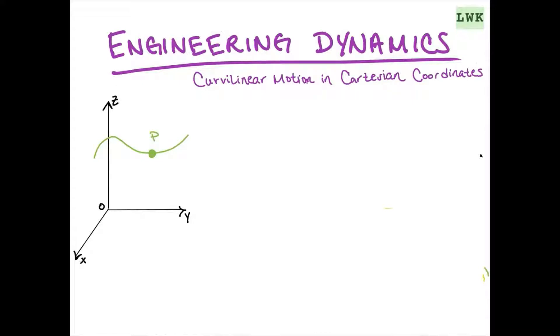So there we go, particle P. We know that we can define the position by using a position vector from the origin to P. If you want to see the video where we define this, I'll link that down below.